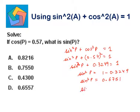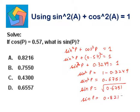So sine squared t is equal to 1 minus 0.3249, which is 0.6751. Taking positive square root, we can say sine p is equal to 0.8216, which is the answer.